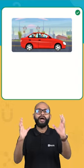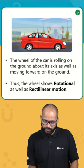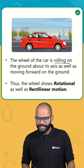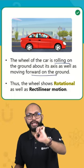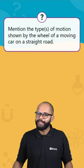So what can we say if we combine both of these learnings? We can say the wheel of a car is rolling on the ground about its axis as well as moving forward on the ground. Means it is showing rotational as well as rectilinear motion. And that becomes our answer, rotational and rectilinear motion.